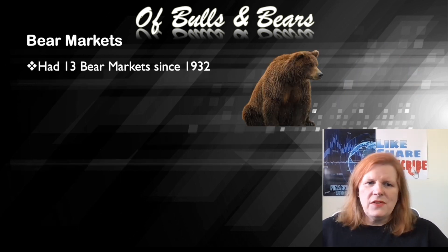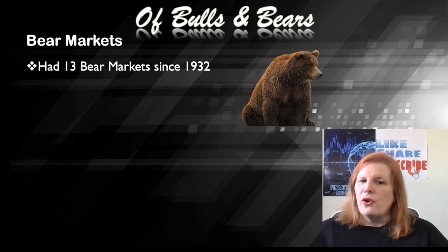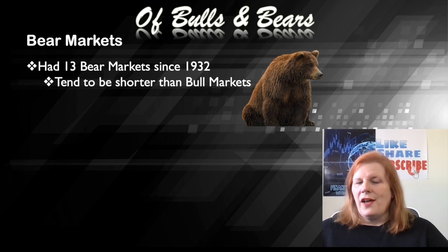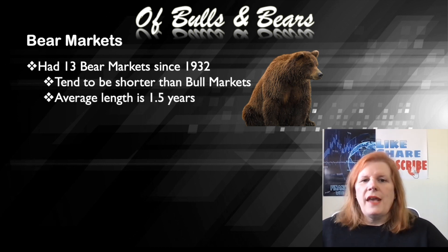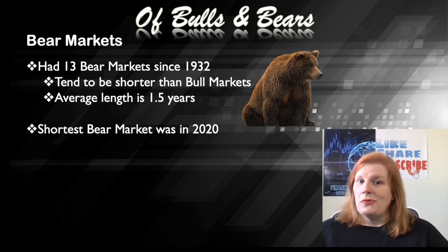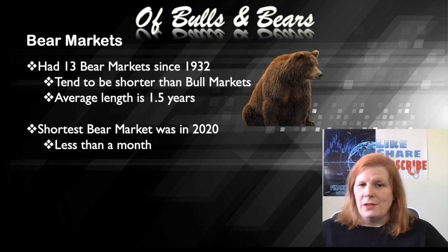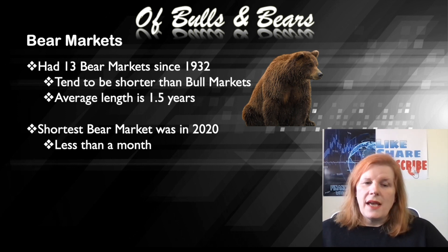Let's talk about bear markets. Since 1932, we've had 13 bear markets. They tend to be shorter in duration than bull markets, which is kind of interesting — and kind of nice as an investor to know that your bear market's going to be shorter than the bull market. The average length of a bear market is 1.5 years. The shortest bear market was in 2020, end of February to end of March. If you look at any chart for almost any asset, you'll see that bear market. It was less than a month, but it still hit the criteria for a bear market. So it does count.